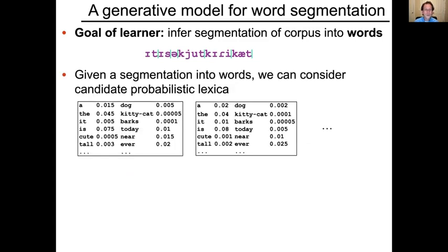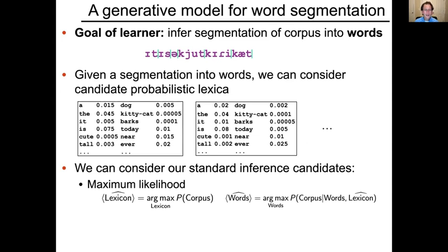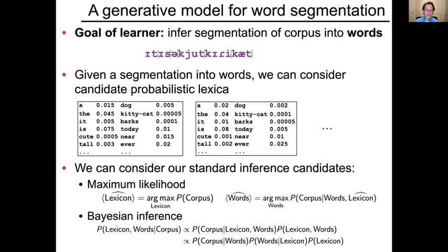A segmentation into words would imply a likely candidate probabilistic lexicon. So the learner, if they're using probability, might use maximum likelihood or Bayesian inference. In the maximum likelihood approach, you're looking for the lexicon that assigns the highest probability to the corpus, and then maybe given that lexicon, the word sequence account of the corpus that gives the highest probability to the corpus given the lexicon and the words.